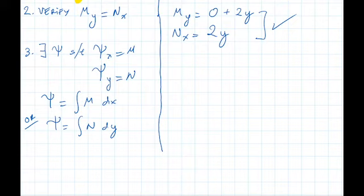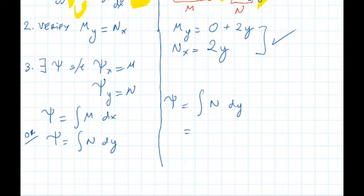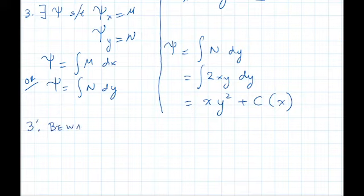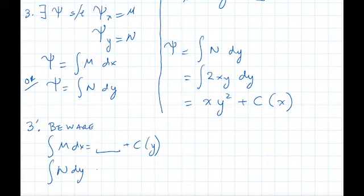And psi is equal to the integral of n dy is equal to 2xy dy, xy squared plus some constant. But beware that that constant is constant in y, meaning it could be a function of x. So let me write that down as a step in the method here. Beware that the integral of m dx is something plus a constant in x but could be a function in y, and the integral of n dy is something plus a c that could be a function in x.